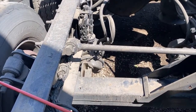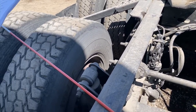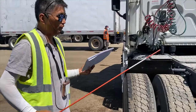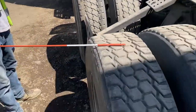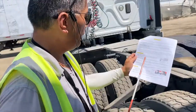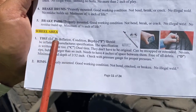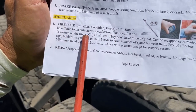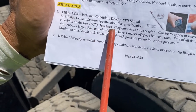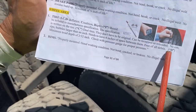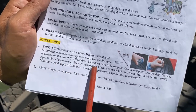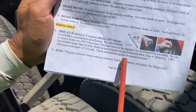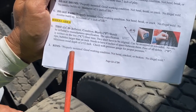So far we've covered suspension, brakes, and now W for wheel. For the wheel area: tire ICD — inflation, condition, depth. Should be inflated to manufacturer specification written on the tire. For dual tires, they can be recapped or retreaded, no cuts or bubbles larger than an inch, must have four inches of space between them, free of all debris, minimum tread depth of 4/32nds. Check with a tire pressure gauge for proper pressure. Rim — properly mounted, good working condition, not bent, cracked or broken, no illegal welds.